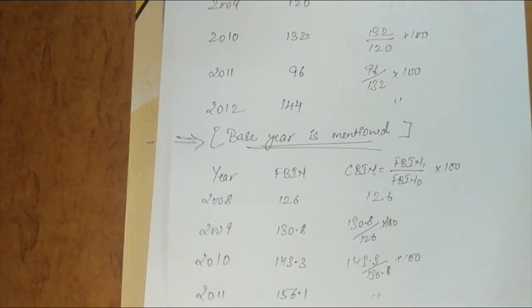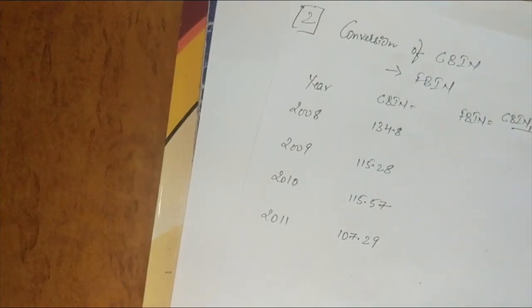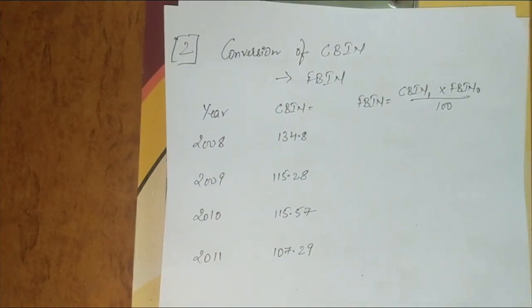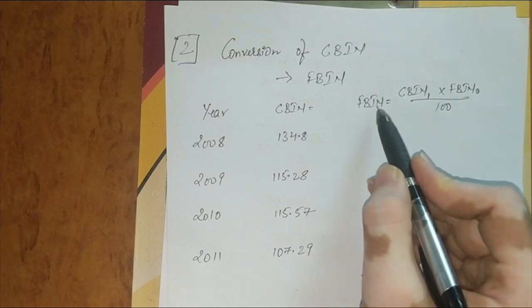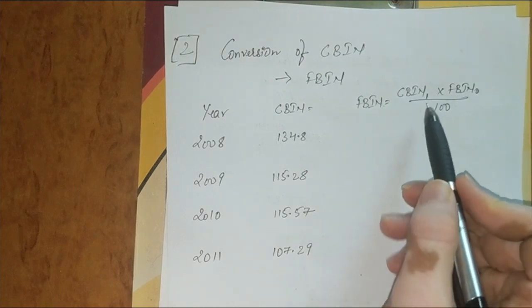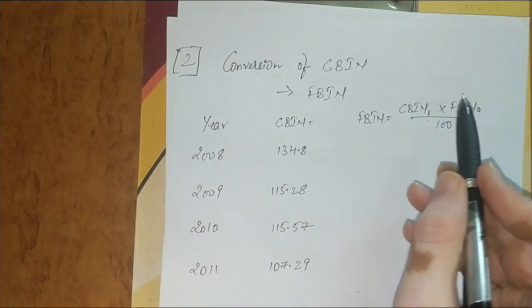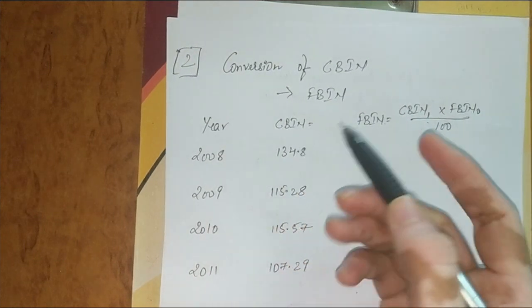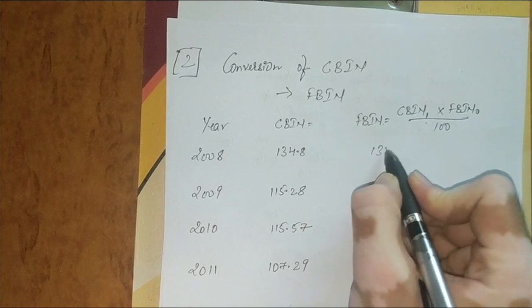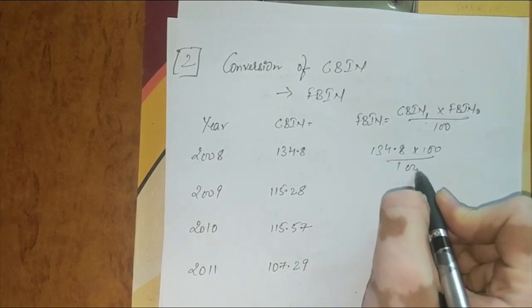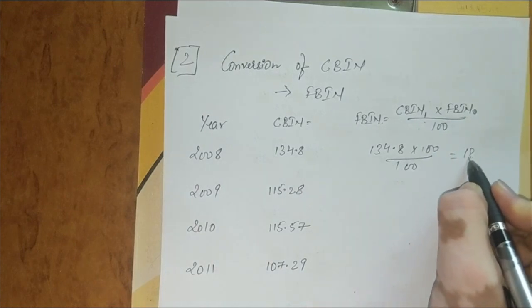Next, coming on—if CBN is given in the question, how do we convert it to FBN? So the formula is: FBN equals CBN of current year, that is 134.8, into FBN of previous year. Here nothing is given, so we assume 100. So 134.8 into 100 divided by 100, that comes to 134.8.